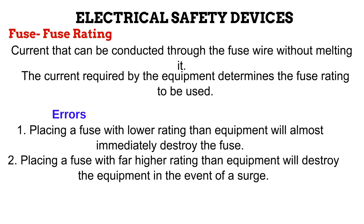If the error of using a fuse with far higher rating is made, the equipment will be destroyed if a surge occurs. For example, equipment needing 15 amperes protected by a 30-ampere fuse: under normal conditions, 15 amperes flows fine through the 30-ampere fuse. However, if an electrical problem causes excess current of, say, 25 amperes, this high current would not melt the 30-ampere fuse — it would reach the equipment and damage it.